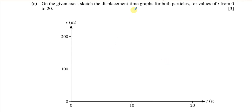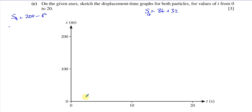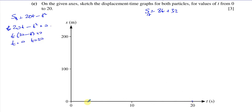For part C, we sketch displacement-time graphs for both particles from T equals 0 to 20 seconds. SA equals 8T plus 32 is a linear graph, and SB equals 20T minus T squared is a quadratic. For the quadratic, factorizing gives T(20 minus T) equals zero, so it returns to zero displacement at T equals 0 and T equals 20. It's a downward-opening parabola with its maximum at T equals 10.